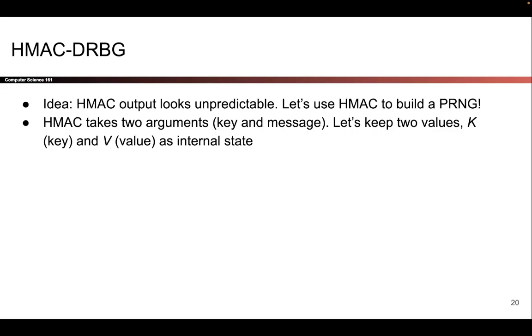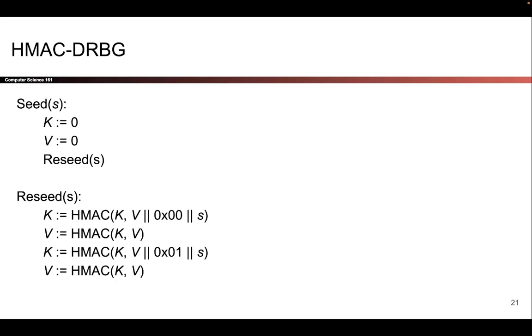So that construction might look something like this. Now don't worry too much about the exact details here, it's not the most important thing. Just remember that what's happening is we're calling HMAC a lot of times, and the unpredictability of that underlying hash is what's giving us our unpredictable output. But if you're curious, here are all the exact details, although they are not the most important thing here.